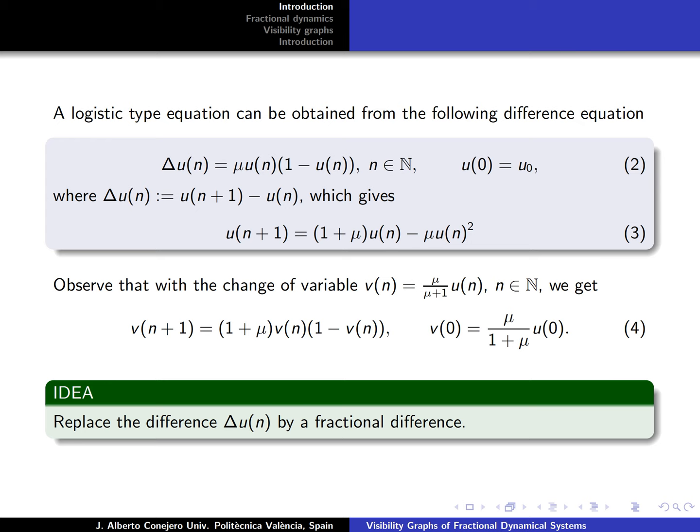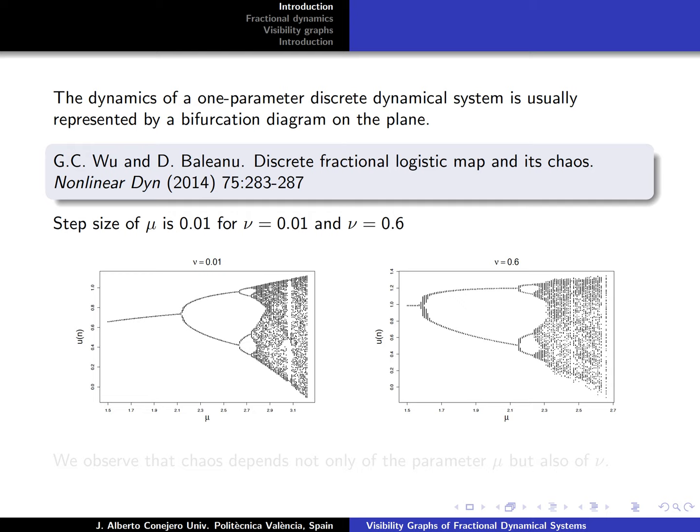The dynamics of a one-parameter discrete dynamical system is usually represented by a bifurcation diagram on the plane. In this case where we have this fractional system, it was already studied by Wu and Baleanu who introduced this in 2014, and we have several representations of the diagrams for ν equal to 0.01 and ν equal to 0.6.